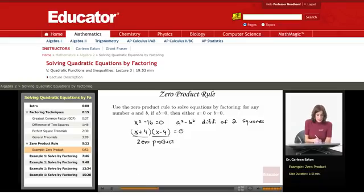So, if x + 4 = 0, this will be solved. If x - 4 = 0, this will be solved. So, I'm going to set this factor equal to 0 and solve for x. I'm going to set this factor equal to 0 and solve for x. And that's going to give me x = -4 and x = 4.